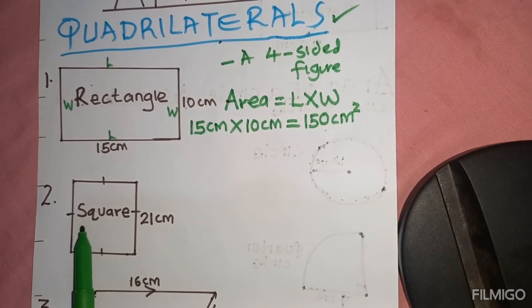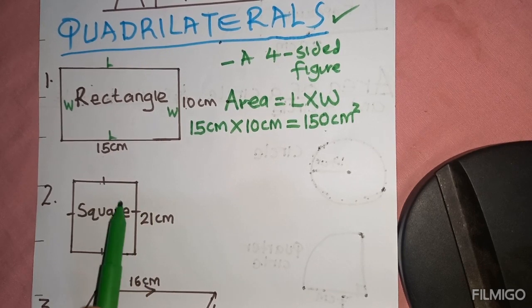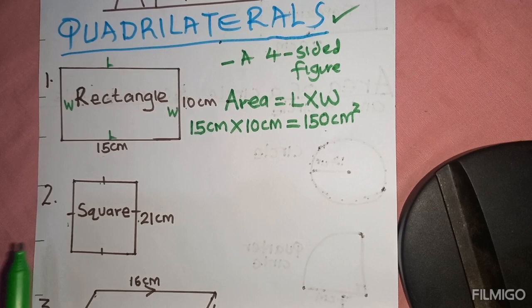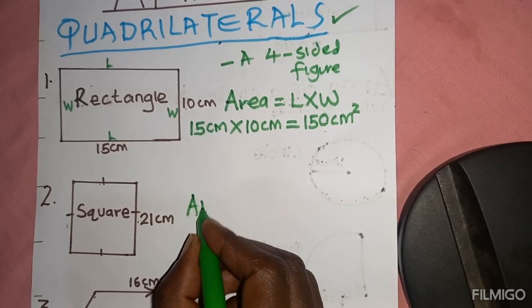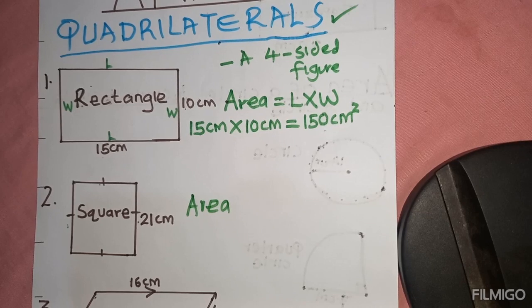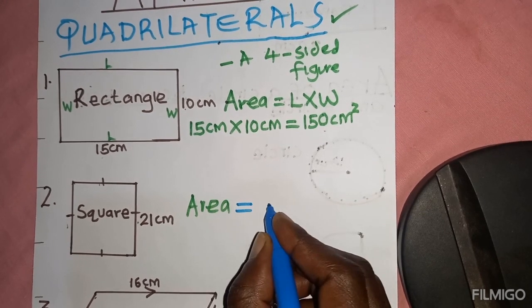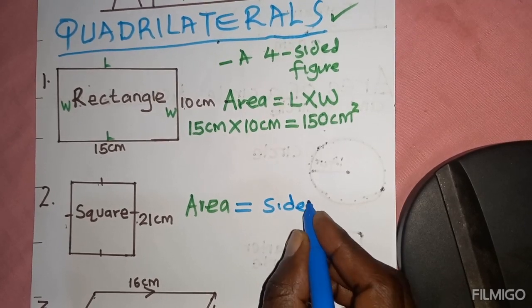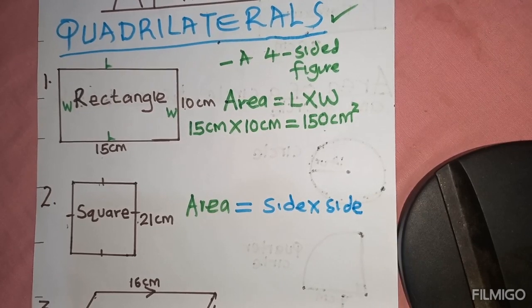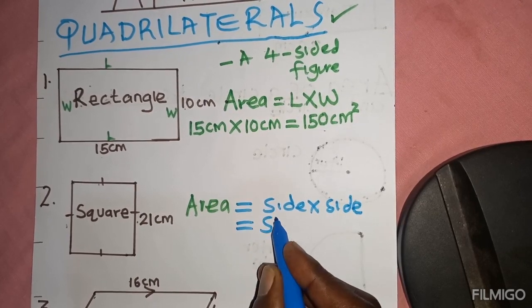We move on. Below that we have a square. A square is a four-sided figure whose all sides are equal — this side is equal to this one, is equal to this one, is equal to this one. So to get the area of a square, we say side times side. The area is side times side because they are equal, which is the same as saying side squared.